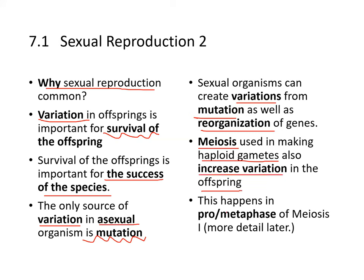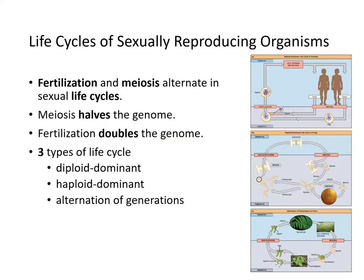Meiosis can be used in making haploid gametes to increase variation in offspring. This happens in prophase and metaphase of meiosis I through the processes of crossing over and independent assortment. In sexual life cycles, fertilization and meiosis alternate — meiosis halves the genome content and fertilization doubles it.